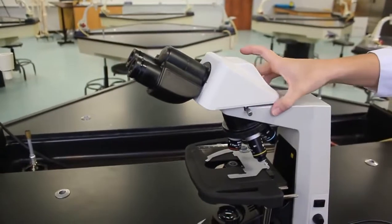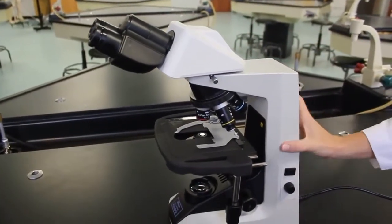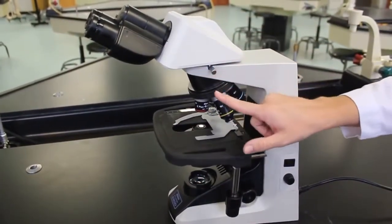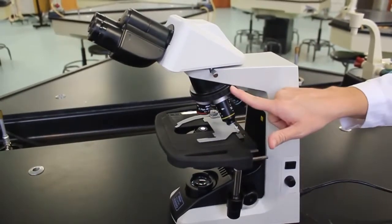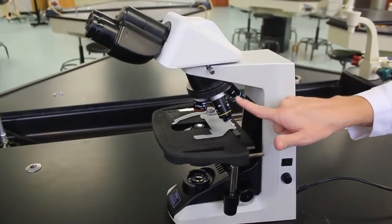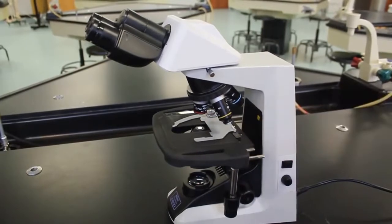Continuing down, this is the arm of the microscope. This is called the revolving nose piece. The different power objectives are attached to the nose piece.